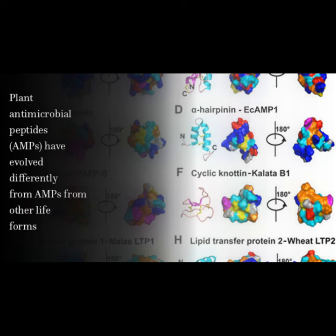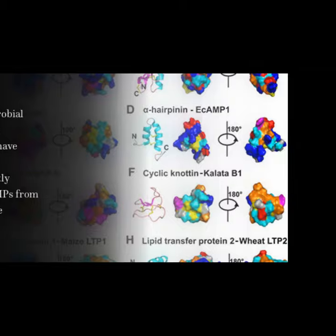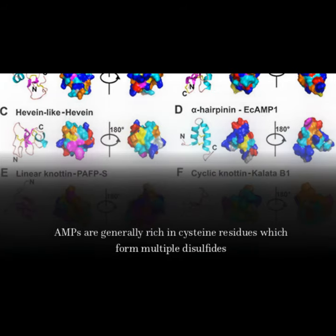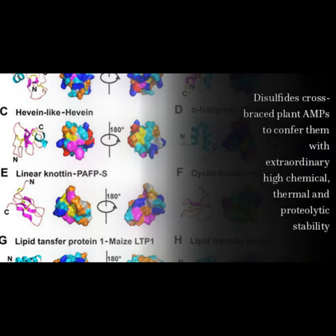Plant antimicrobial peptides, AMPs, have evolved differently from AMPs from other life forms. AMPs are generally rich in cysteine residues which form multiple disulfides. Disulfides cross-braced plant AMPs confer them with extraordinarily high chemical, thermal, and proteolytic stability.